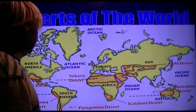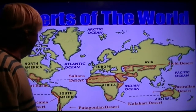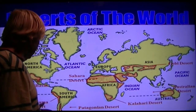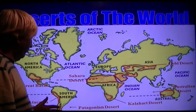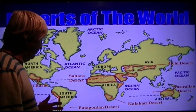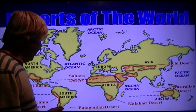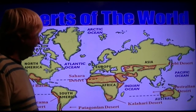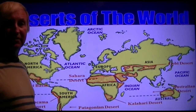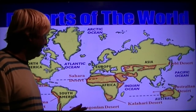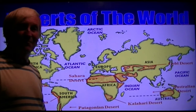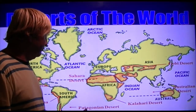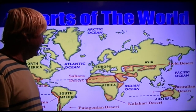The Patagonian Desert is a rain shadow desert because the Andes Mountains block the moisture. It is the driest desert in the world — there are parts that have not had any measurable rainfall in almost a decade.